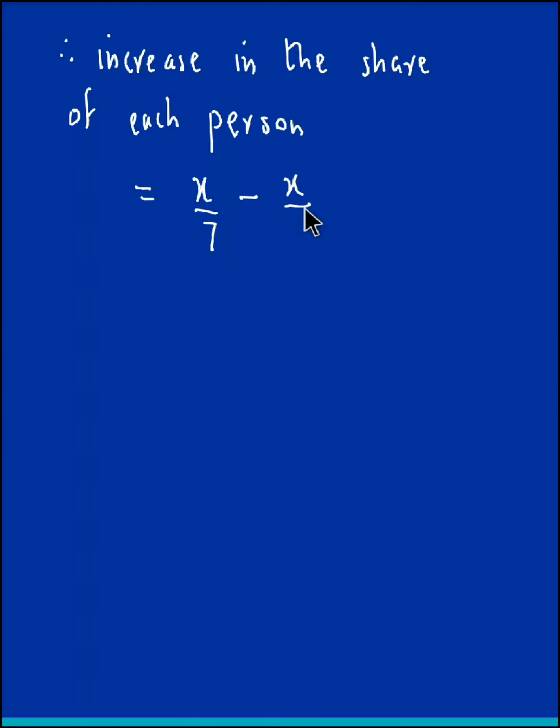Let us simplify this. This becomes 8x minus 7x upon 56, so that is x/56.